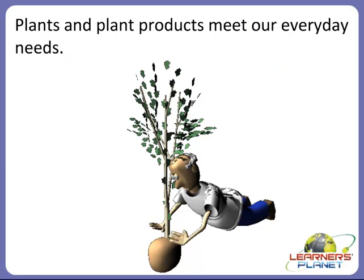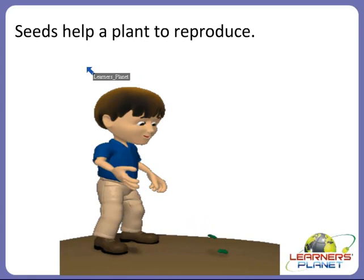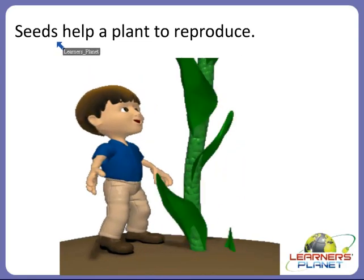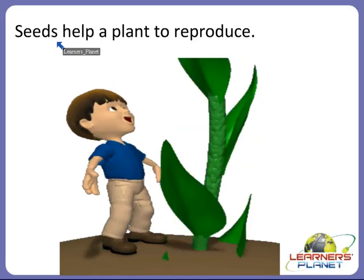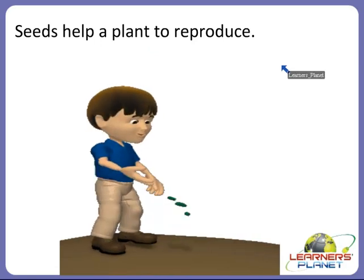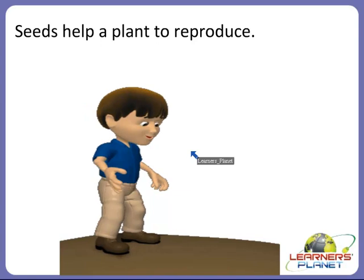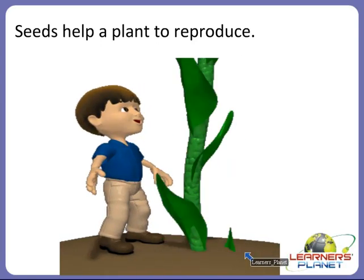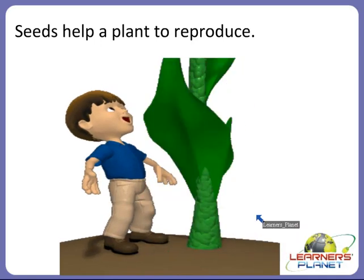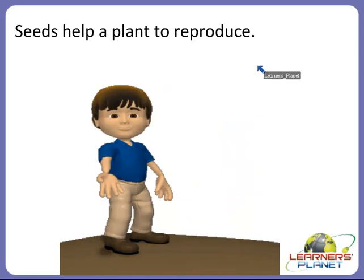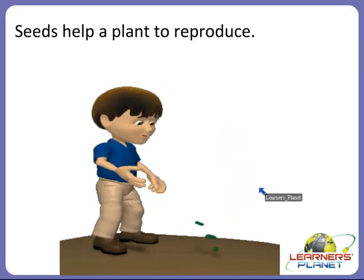Now we will study about seeds. What is actually a seed? Seeds are very helpful for a plant to reproduce. They are very small in structure, and as you can see in this picture, a boy is scattering seeds on the soil. After some time, a seed helps a plant to reproduce — a plant grows from the seeds.